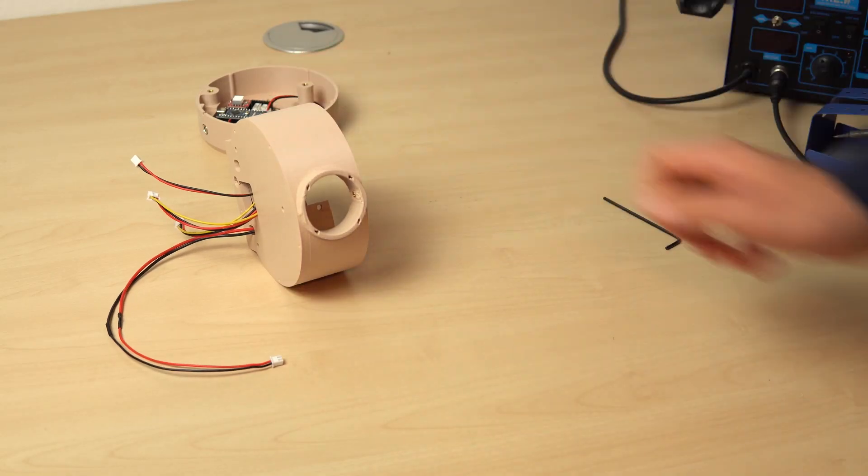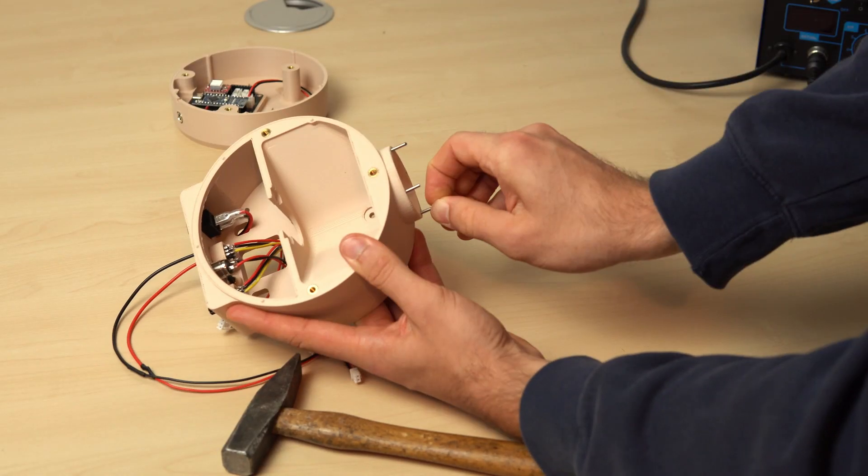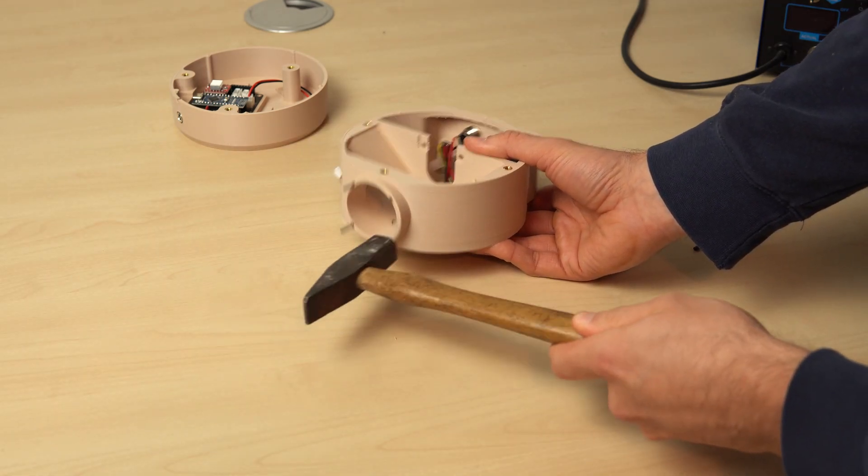Now we go to the front of the middle part. Here the four 2mm stainless steel pins need to be squeezed into the printed sockets. It helps to use a smaller hammer to make them slide the last few millimeters.